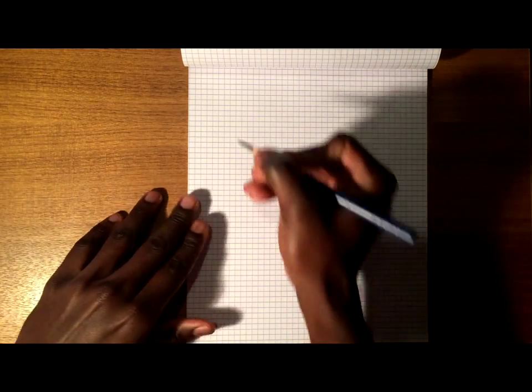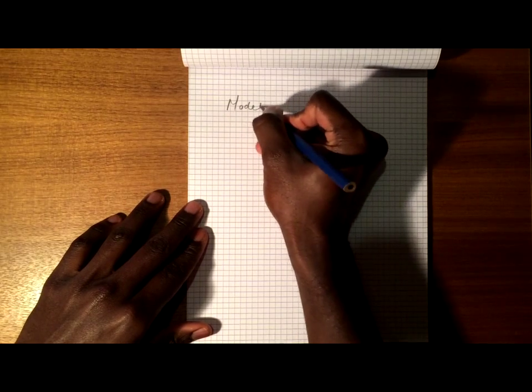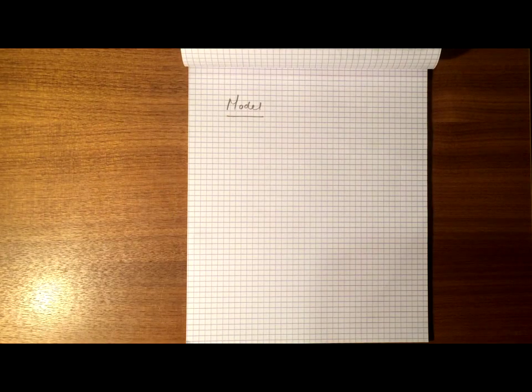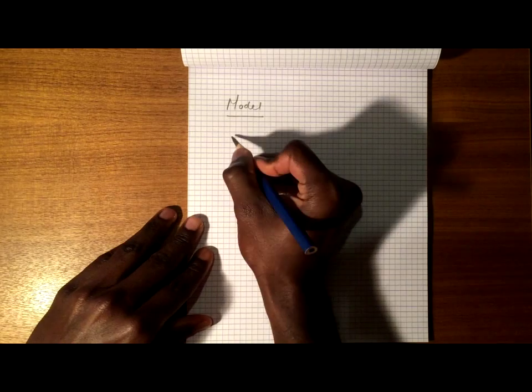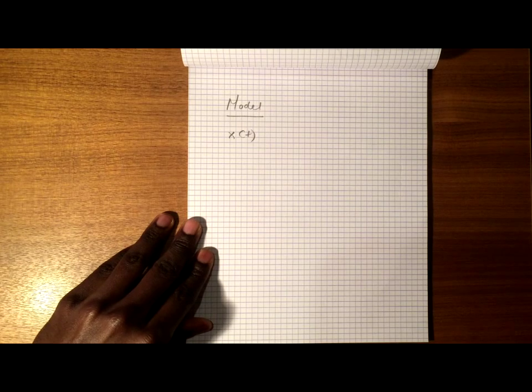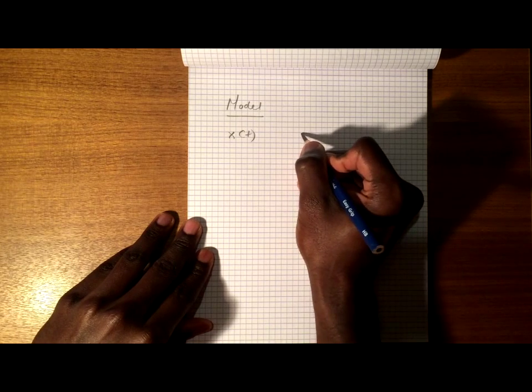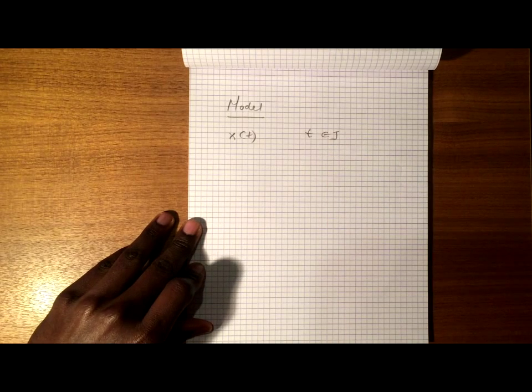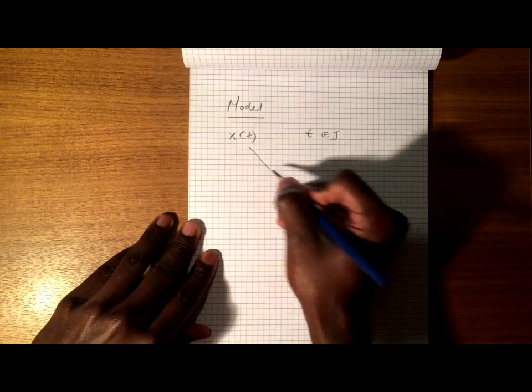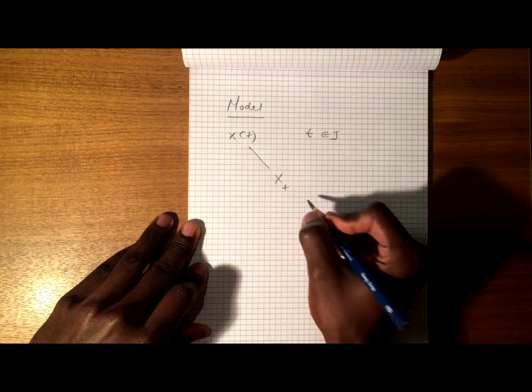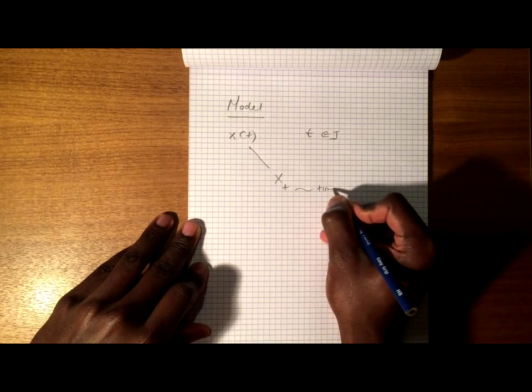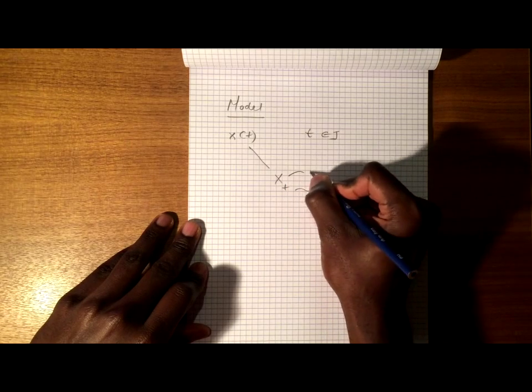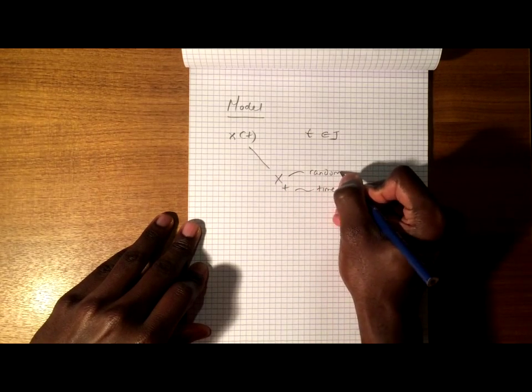So what is a stochastic process? Well a stochastic process is a model for a time-dependent random phenomenon. It is a collection of random variables xt, one for each time set t belonging to j. xt may also be denoted by x little t, where little t represents our time variable and x is of course our random variable.